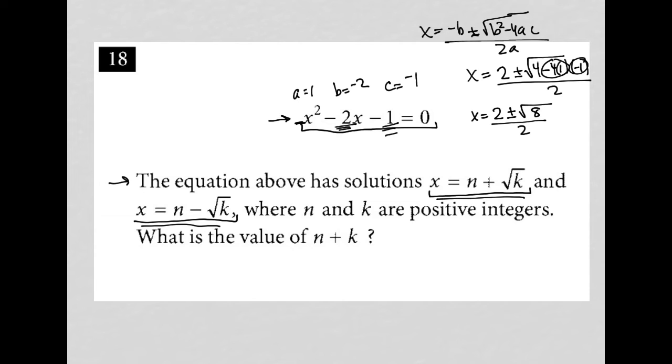I can simplify this to x equals 2 plus or minus—the square root of 8 is the same as 2 root 2. That comes from breaking down root 8 into root 4 times root 2.